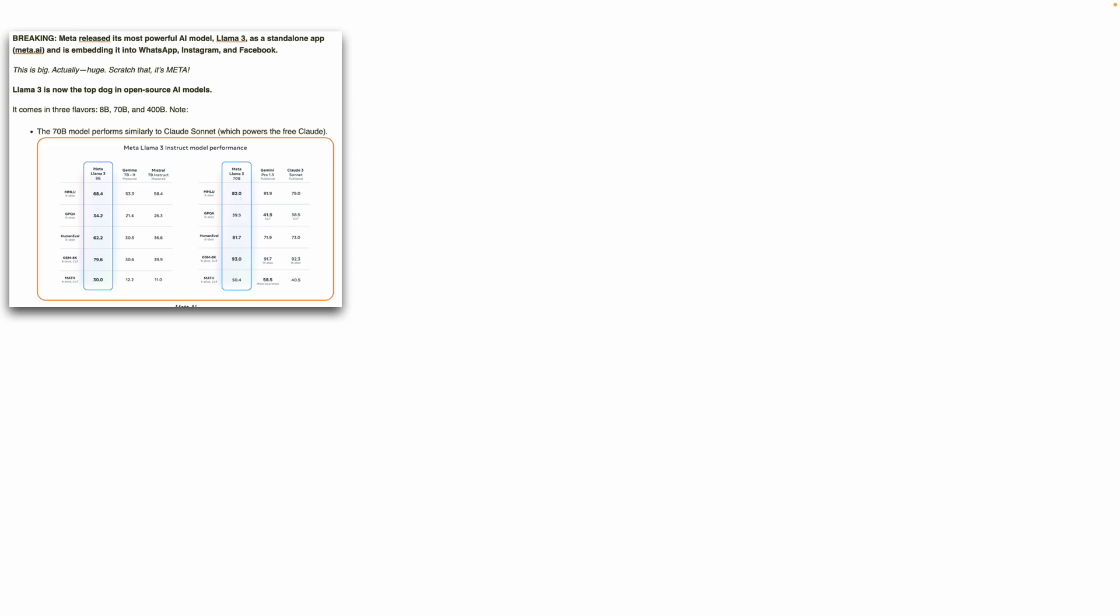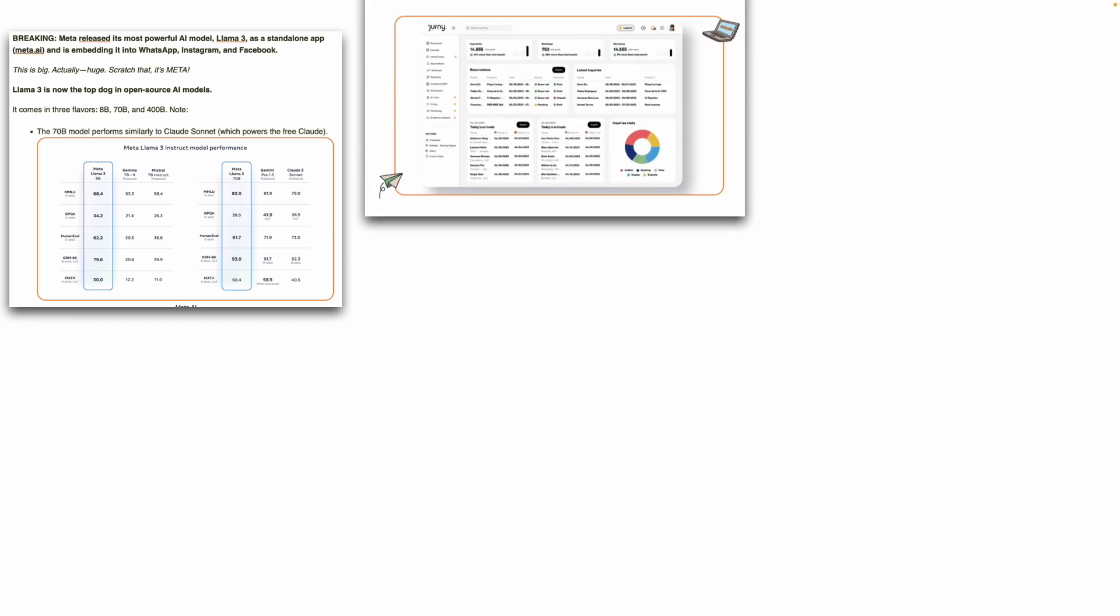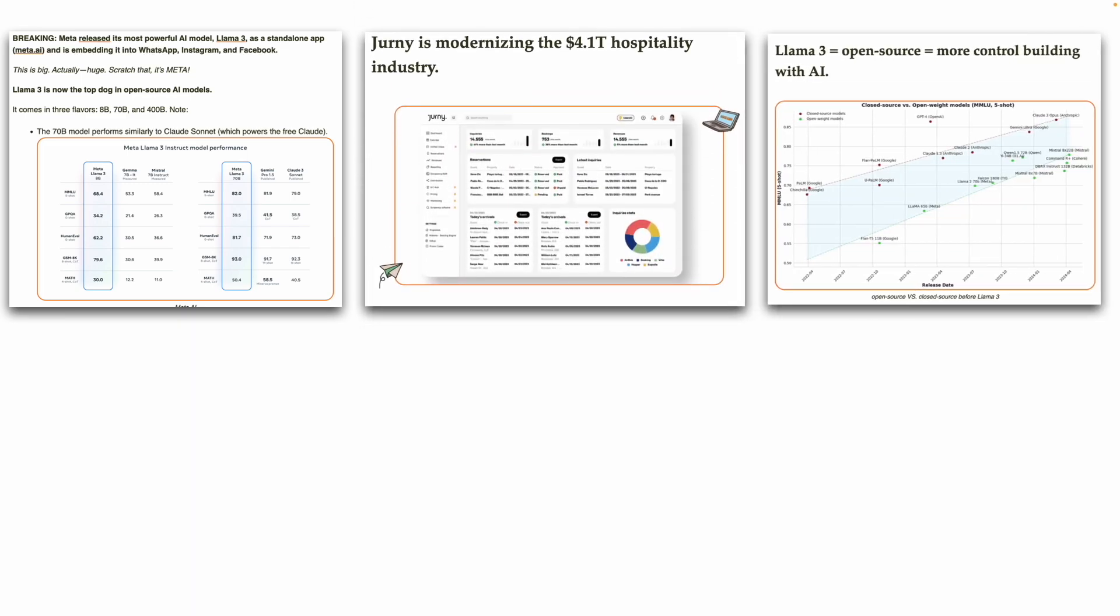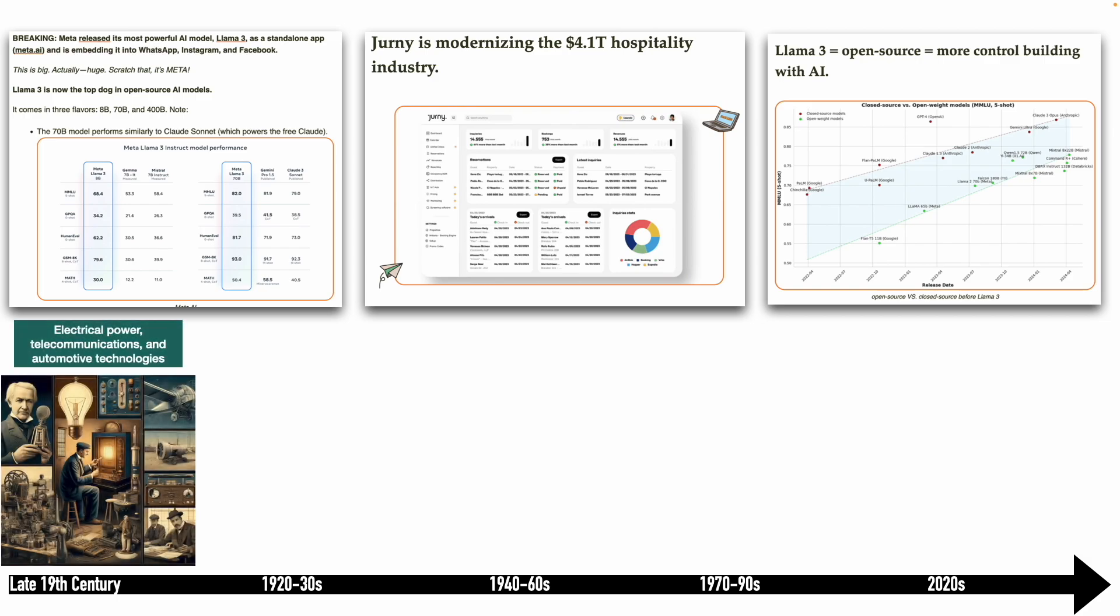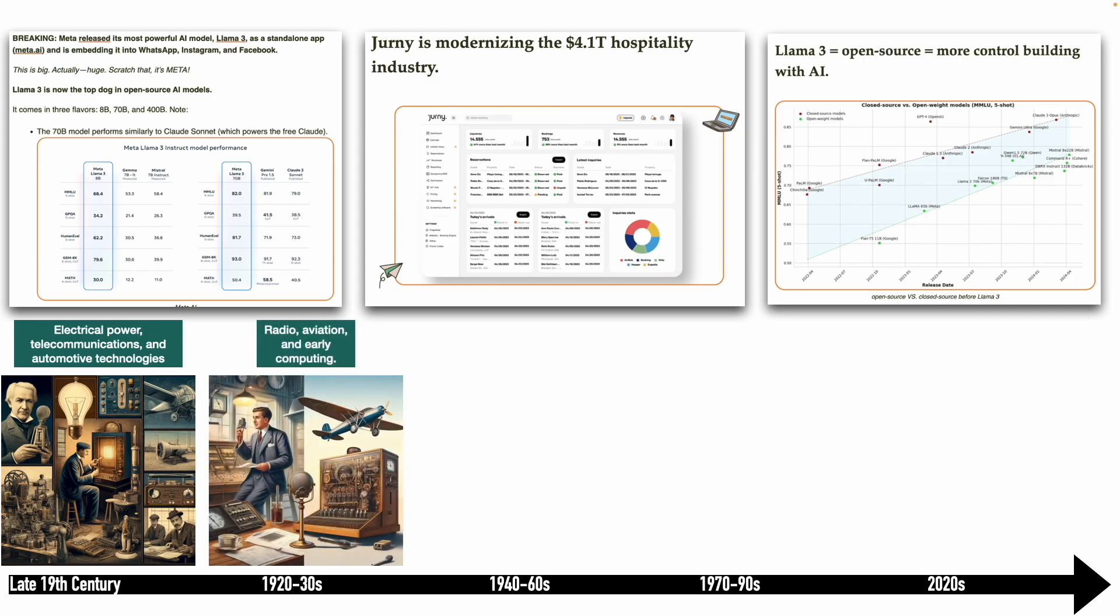If you have not been living under a rock, there is almost a daily barrage of latest innovations happening in the space of AI. If you think about the timelines of human history, we are living in unprecedented times. If the late 19th century was about the invention of electric power, telecommunication, and automotive technologies, then the 1920s and 30s was all about radio, aviation, and early computing.